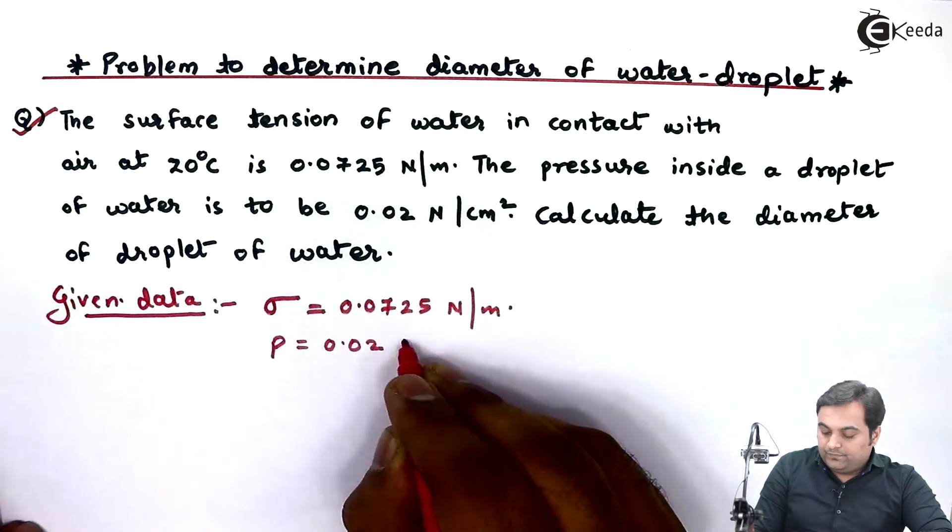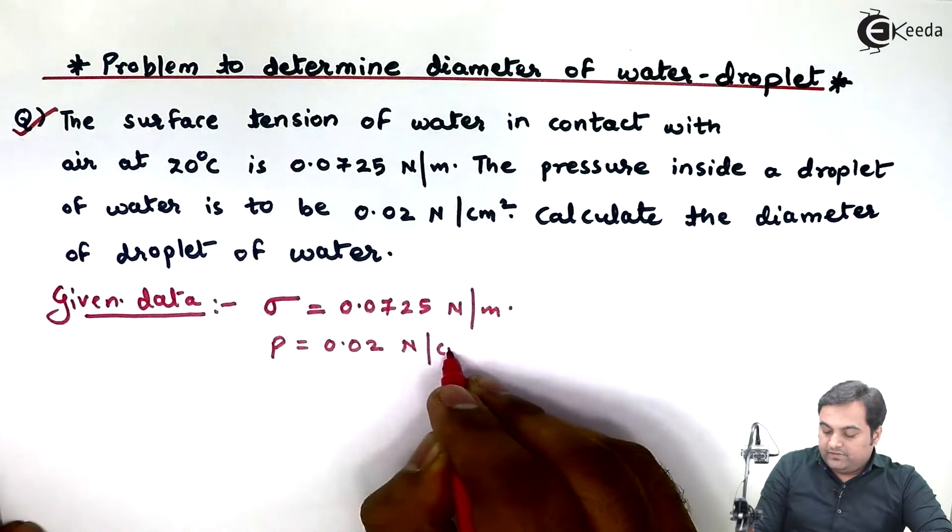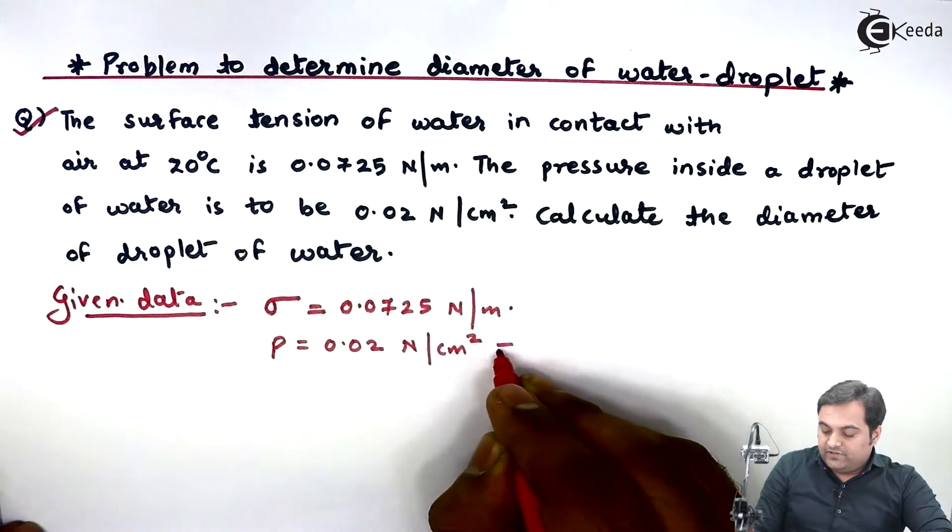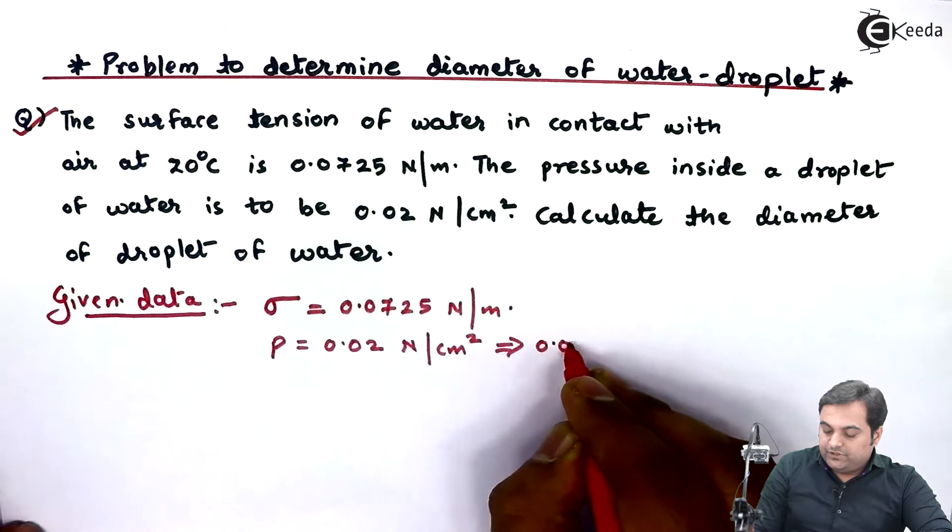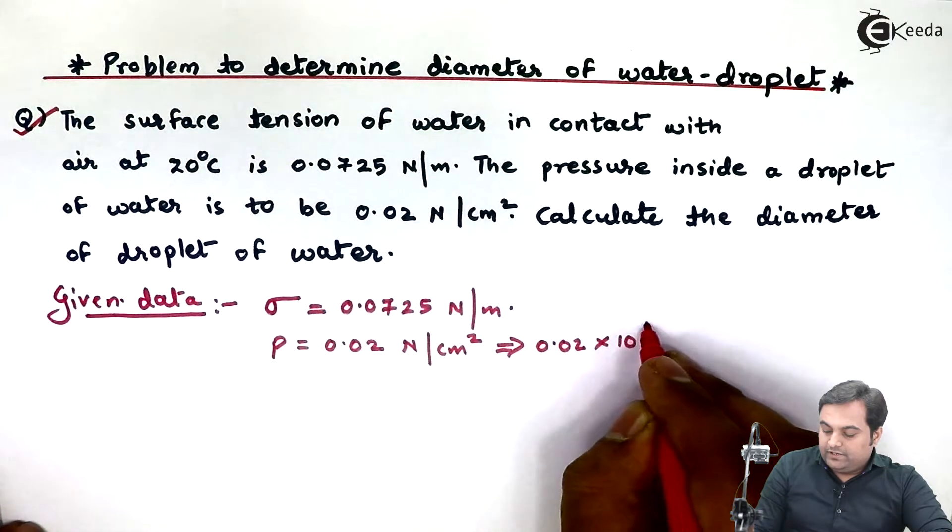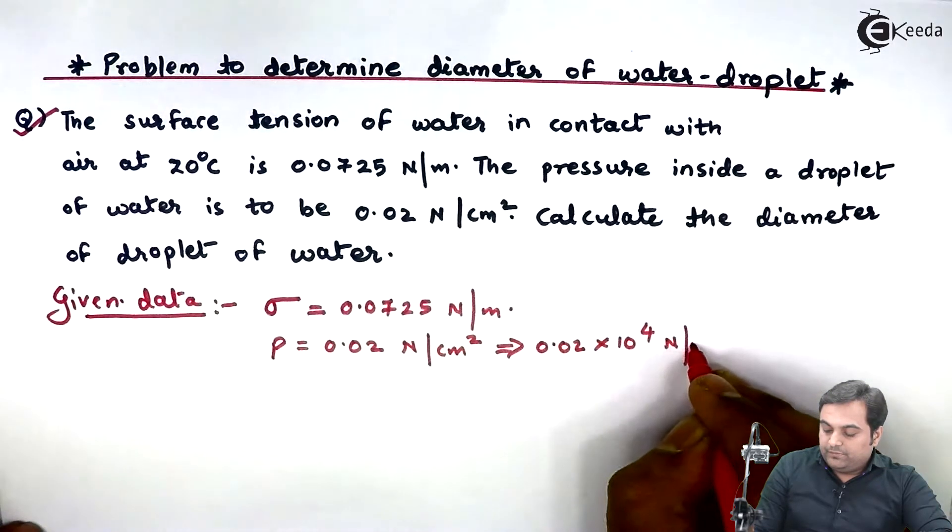So pressure inside the water droplet is 0.02 Newton per centimeter square. This we can convert: it becomes 0.02 into 10 raised to 4 Newton per meter square.